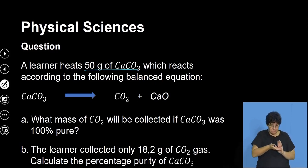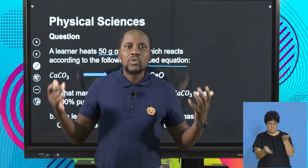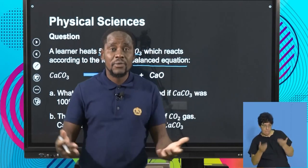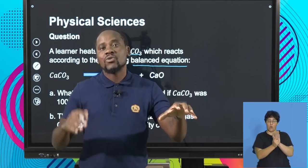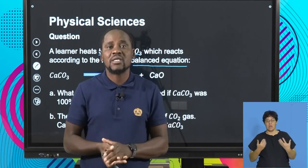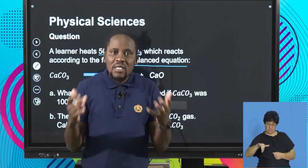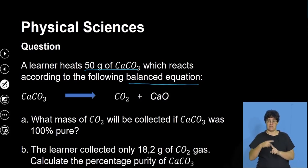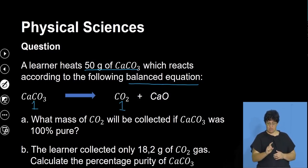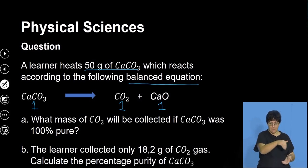Elena heats 50 grams of calcium carbonate, which reacts according to a given balanced equation. It's not always required to balance the equation yourself — sometimes it's given, so the law of conservation of mass has already been taken care of. Calcium carbonate decomposes to give carbon dioxide and calcium oxide. Since the equation is balanced, the stoichiometric ratio in which they react is 1:1:1.